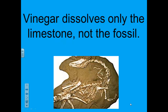Limestone can be dissolved by vinegar. A bubbling reaction occurs when you put the vinegar on the limestone. Fossils, which are made of a different kind of rock, do not react with vinegar as quickly. So scientists sometimes use vinegar or similar chemicals to separate fossils from rock.